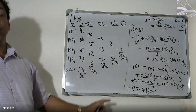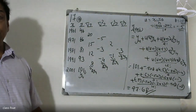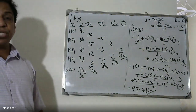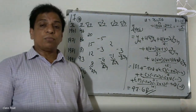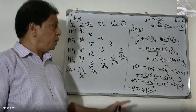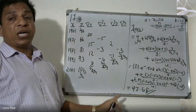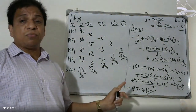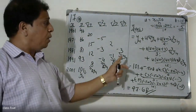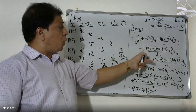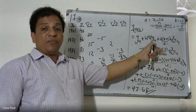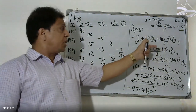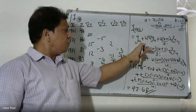Newton's backward interpolation formula — this is how we work out problems. You should know the formula. If we need the formula, we use Y₄ as the starting point.